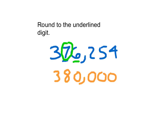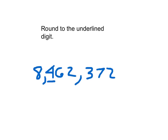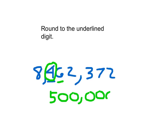When we're rounding larger numbers, all we need to do is take a few more steps. Here we have the number 8,462,372, and again we're asked to round to the underlined digit. The underlined digit we're going to change to a circle and underline the 6. We're rounding this number to the 100,000th place. Because the 6 is between 5 and 9, we add 1 to that 4 — the 4 becomes a 5. We flex our muscles like a hero and all digits to the right of that circled number change to 0. Last step: all other digits stay the same.